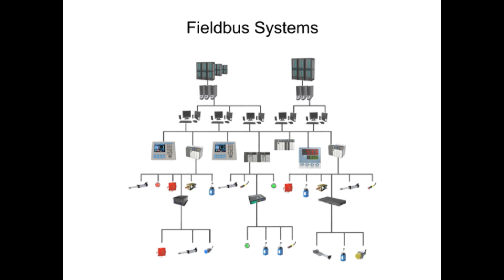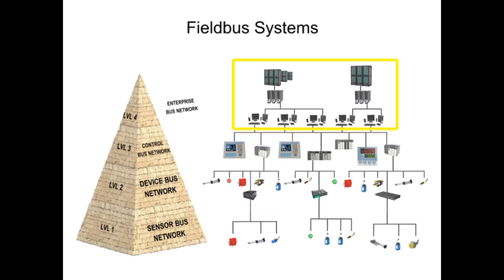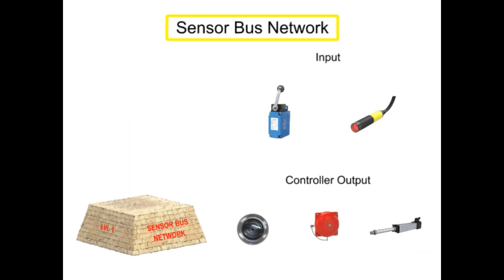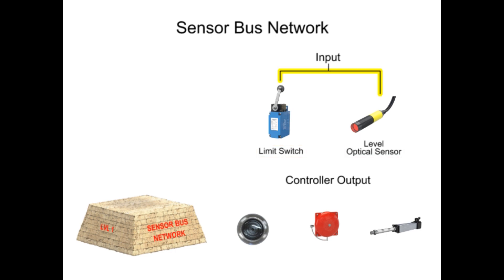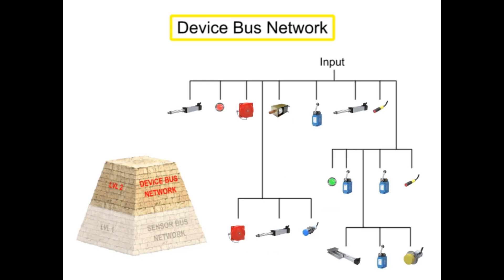Fieldbus industrial networks can be broken down into four levels, each with increasing levels of complexity. The most basic level is the sensorbus network. Sensorbus networks are the least complex of networks developed for industrial application. In these networks, multiple basic field devices like limit switches or level optical sensors are connected to one network cable. The sensorbus network is also capable of transmitting output signals from the controller over one cable to indicator lamps, alarms, or other actuator devices.